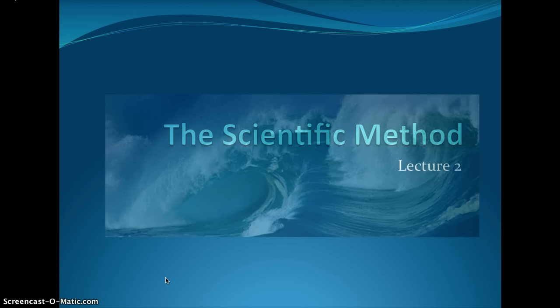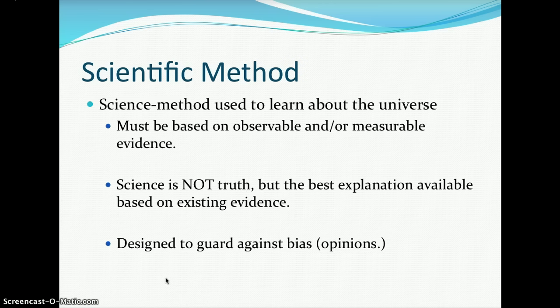The next lecture covers the scientific method. Basically, science is a method used to learn about the universe. It must be based on observable and/or measurable evidence — we do not base it on opinions. That's why the scientific method is designed to guard against bias. Science is not absolute truth, but it does provide us with the best explanation available based on existing evidence. Things in science can change if new evidence comes out to support that change.